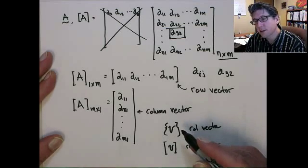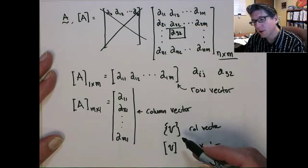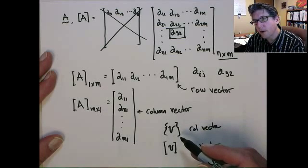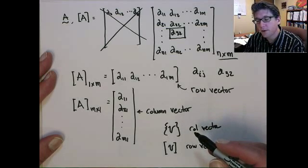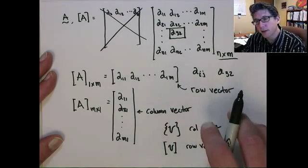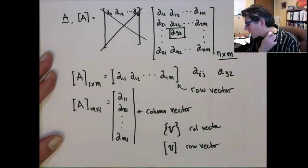And usually, in this case, you know, this is where you have to be a little careful. Usually, it's implied from the context it's in, whether it's being multiplied by a matrix and what the dimension of the matrix is. And we'll talk about that later.